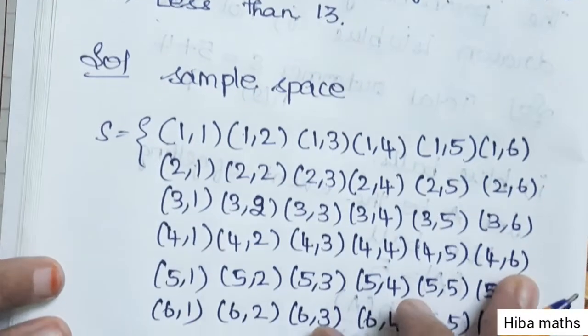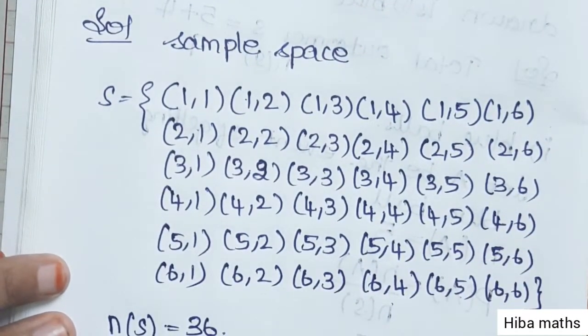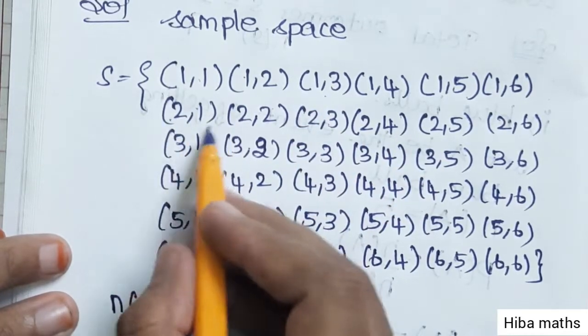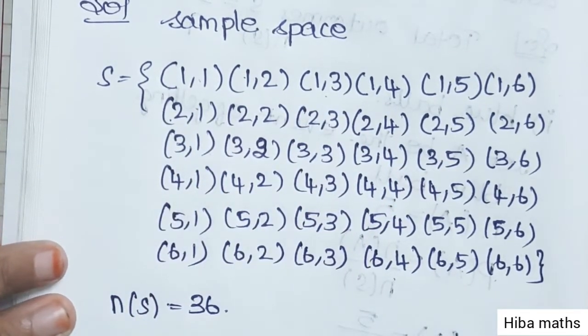When two dice are rolled, the sample space consists of ordered pairs: (1,1), (1,2), (1,3), (1,4), (1,5), (1,6), continuing through (2,1), (2,2), and so on up to (6,6).